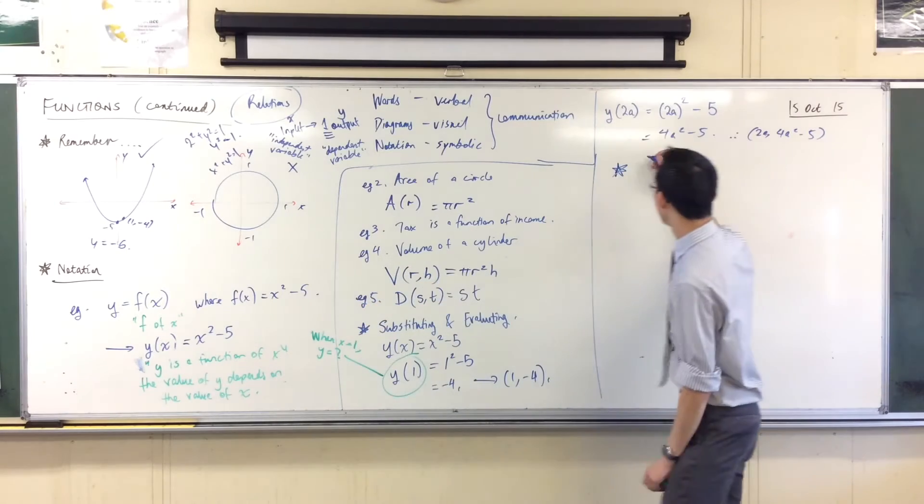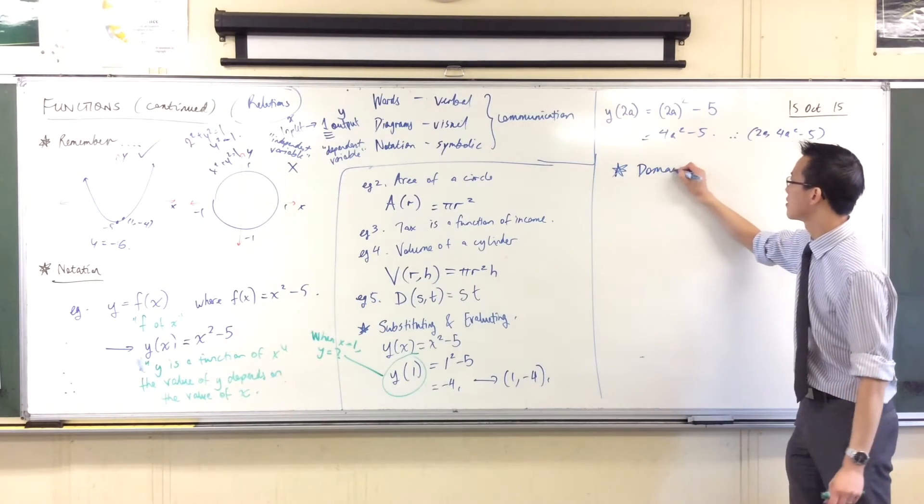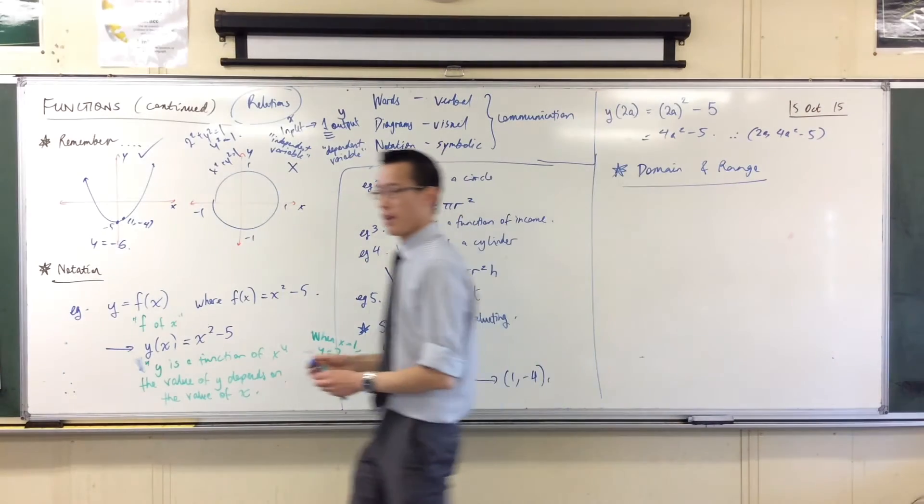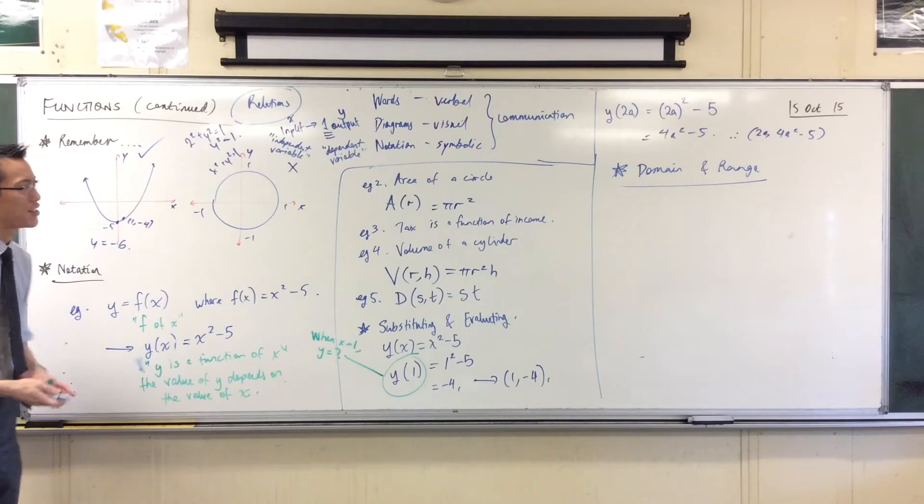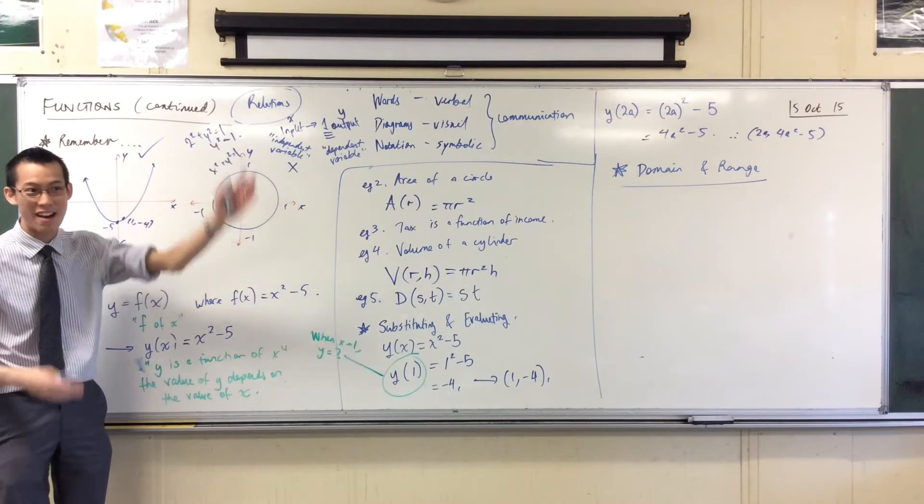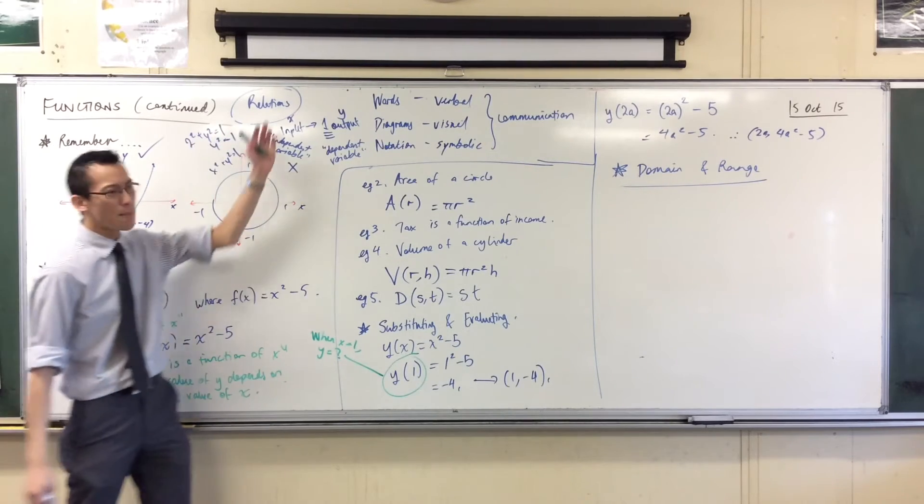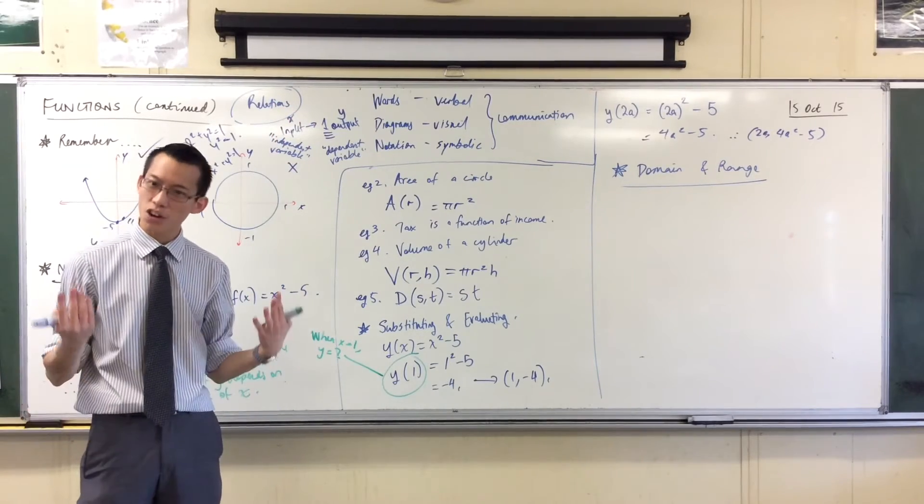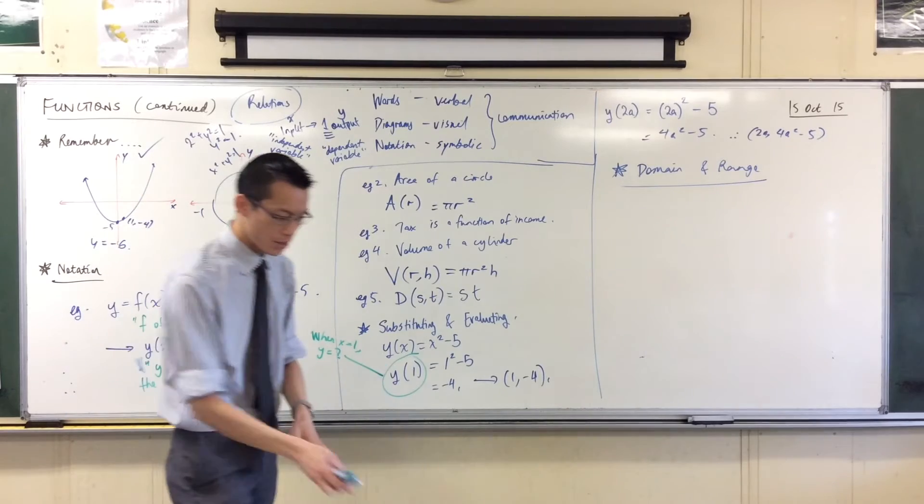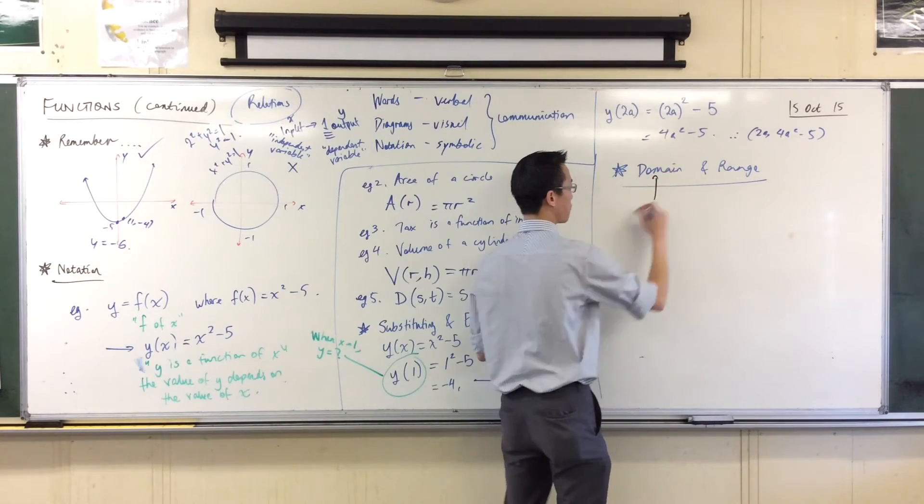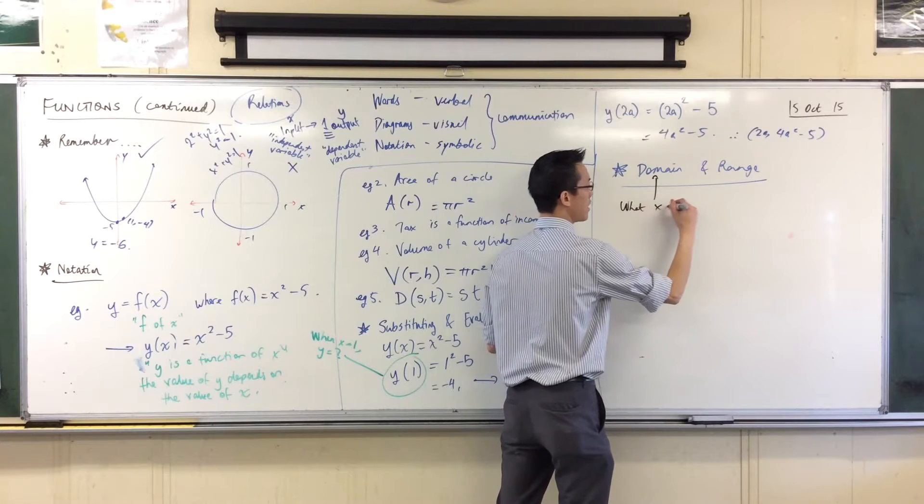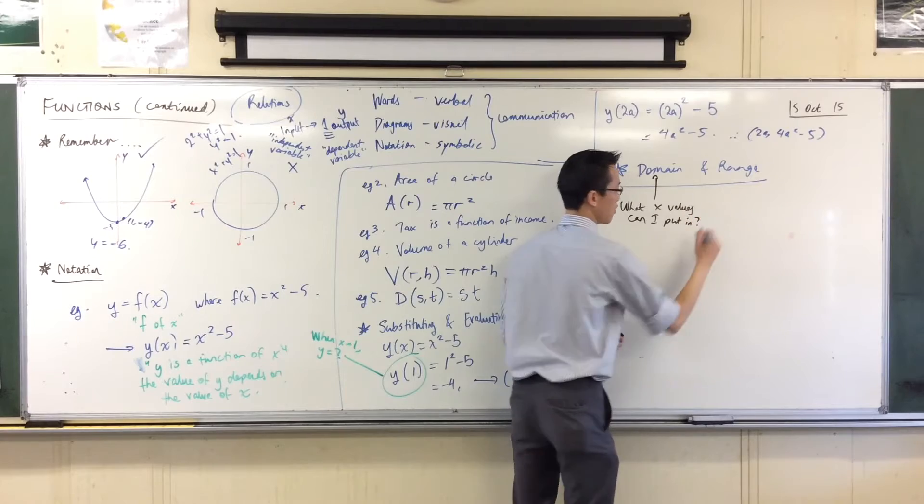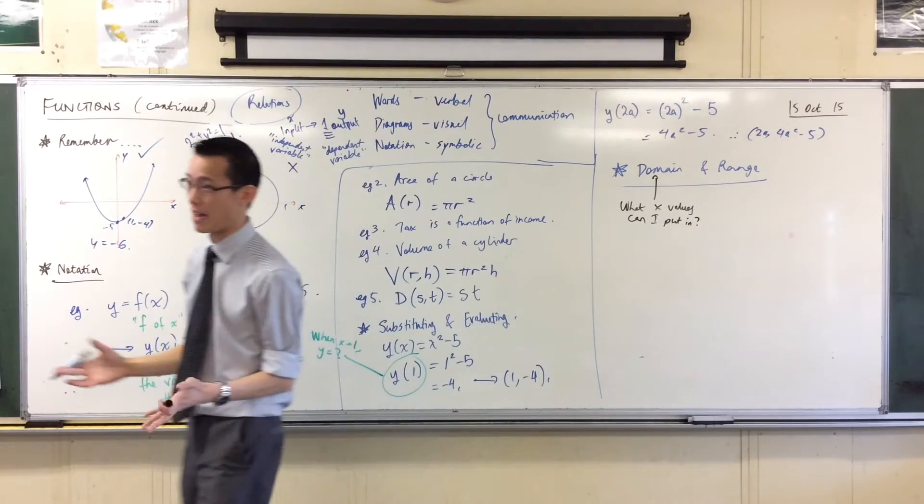Therefore, out of this, we get this new notation called domain and range. Let me give you a definition. Domain and range is all about: if some inputs break our function and if some outputs are impossible with my function, then I want to know what works. Domain simply means what X values can I put in, because some work and some don't.